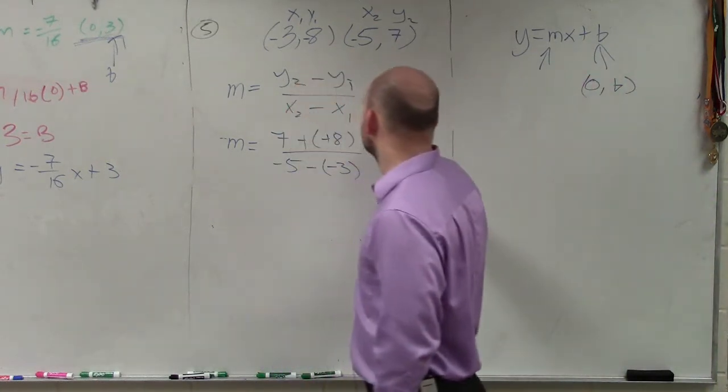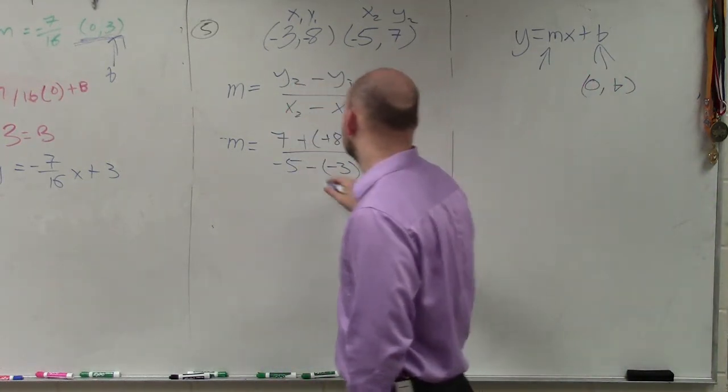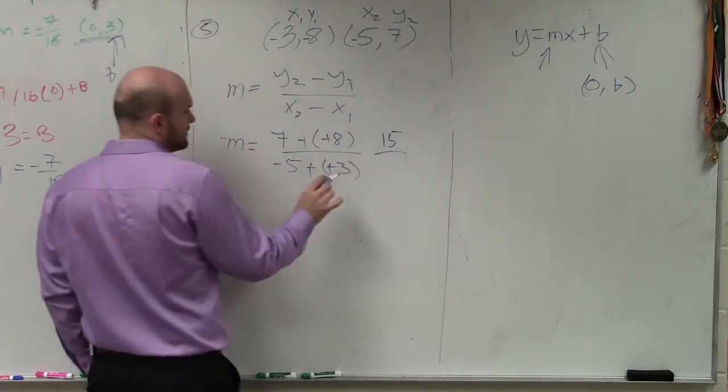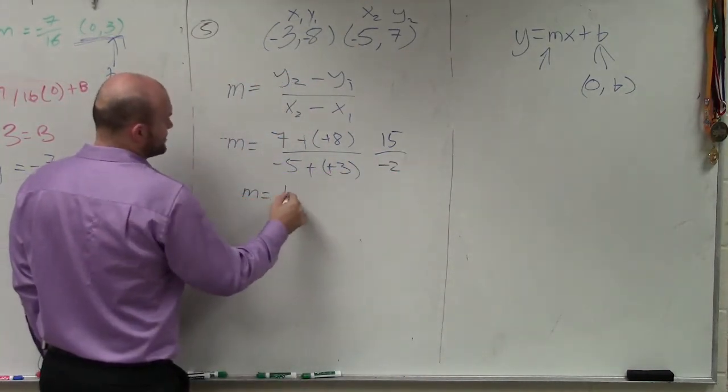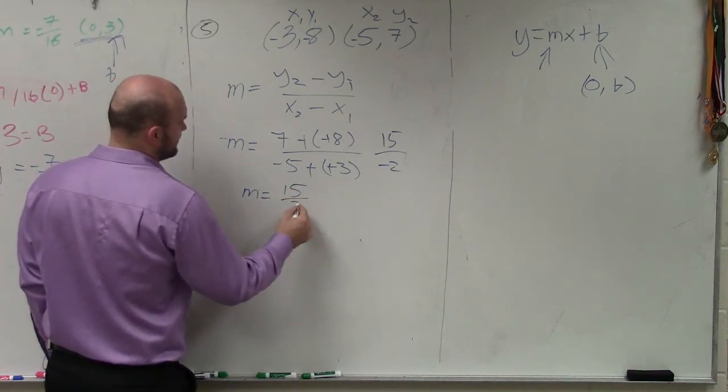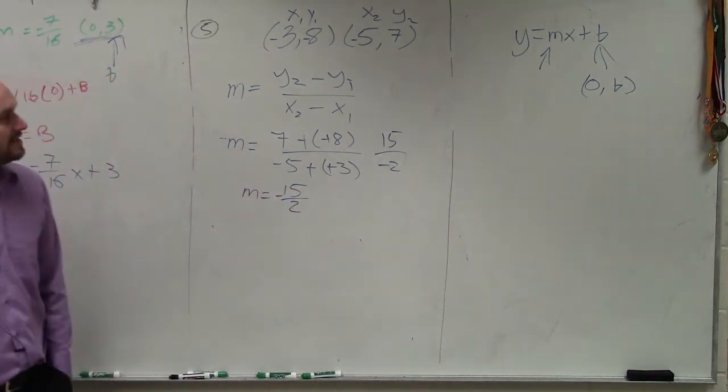Therefore, this becomes 15. And that becomes a negative 2. So therefore, my slope is equal to a negative 15 halves.